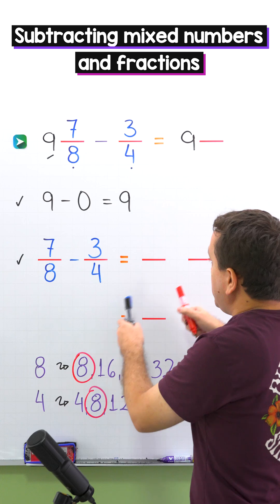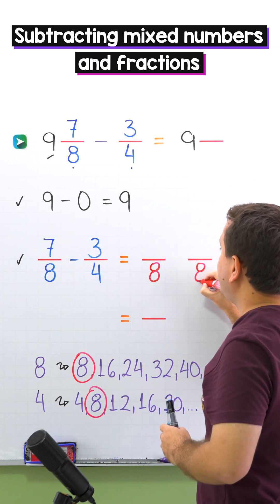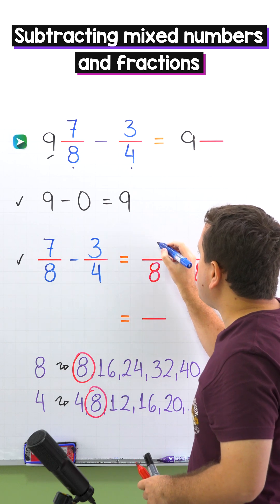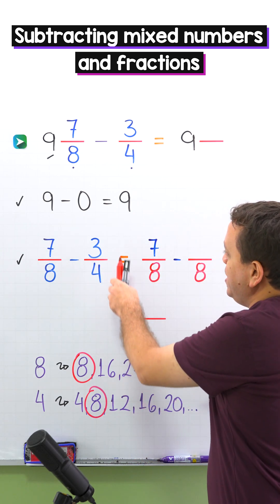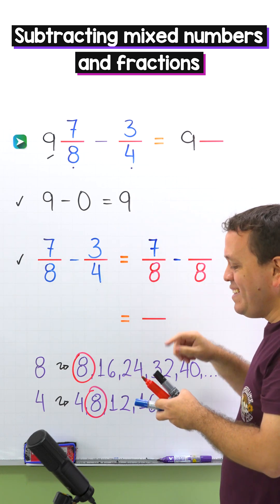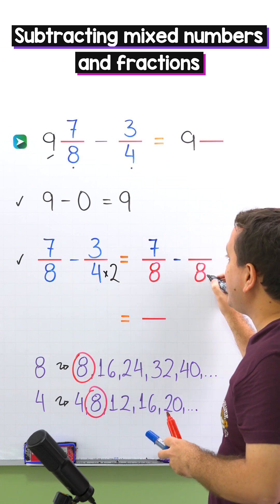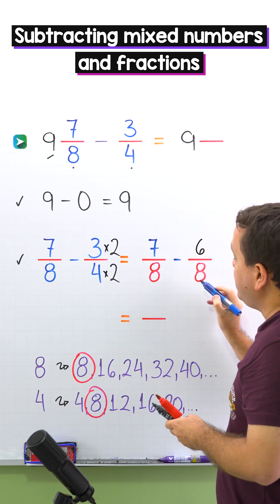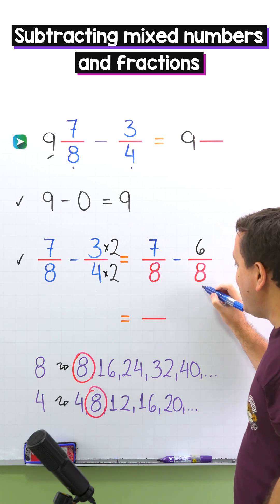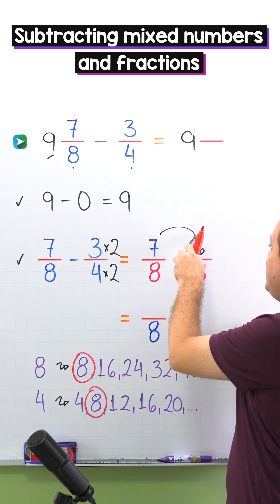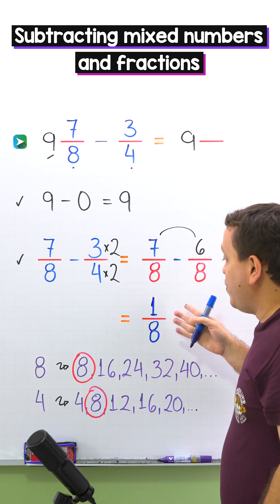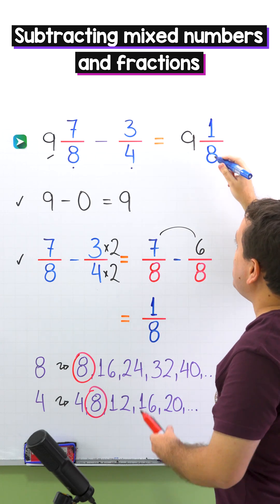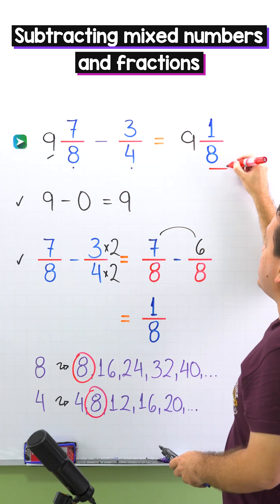For each fraction we need an equivalent fraction with a denominator of eight. Seven eighths already has a denominator of eight, so we keep the same fraction seven eighths, then the minus sign. For three fourths: by what number should we multiply four to get eight? By two — four times two equals eight. Whatever we do to the bottom we must do to the top, and three times two gives us six. Now we subtract: eight on the left, eight on the right, so we put eight as the denominator and seven minus six gives us one. The difference of the fractions is one eighth. Finally, we add one eighth to nine, so nine and seven eighths minus three fourths gives us nine and one eighth.